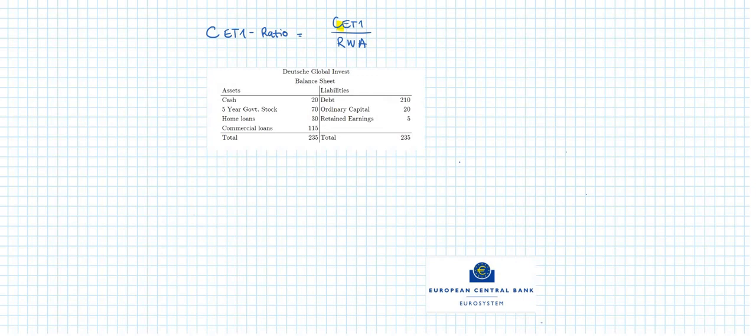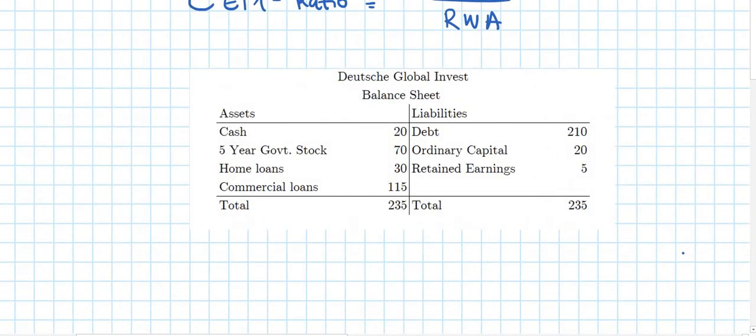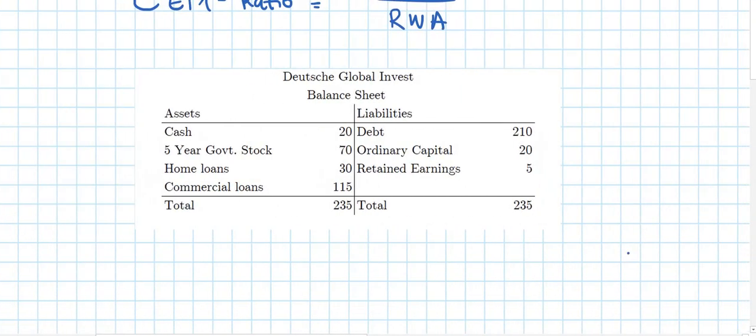And both have to do with positions on the balance sheet of a bank. Let's look at this balance sheet of a simple bank. We just call it Deutsche Global Invest, and it has assets and liabilities.